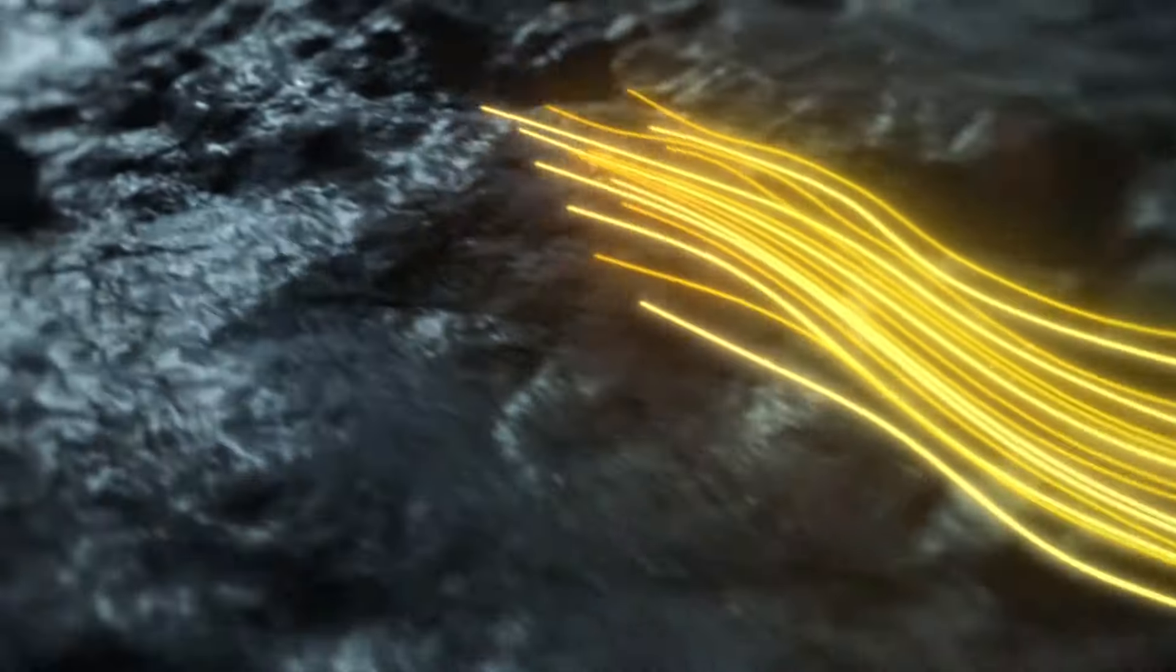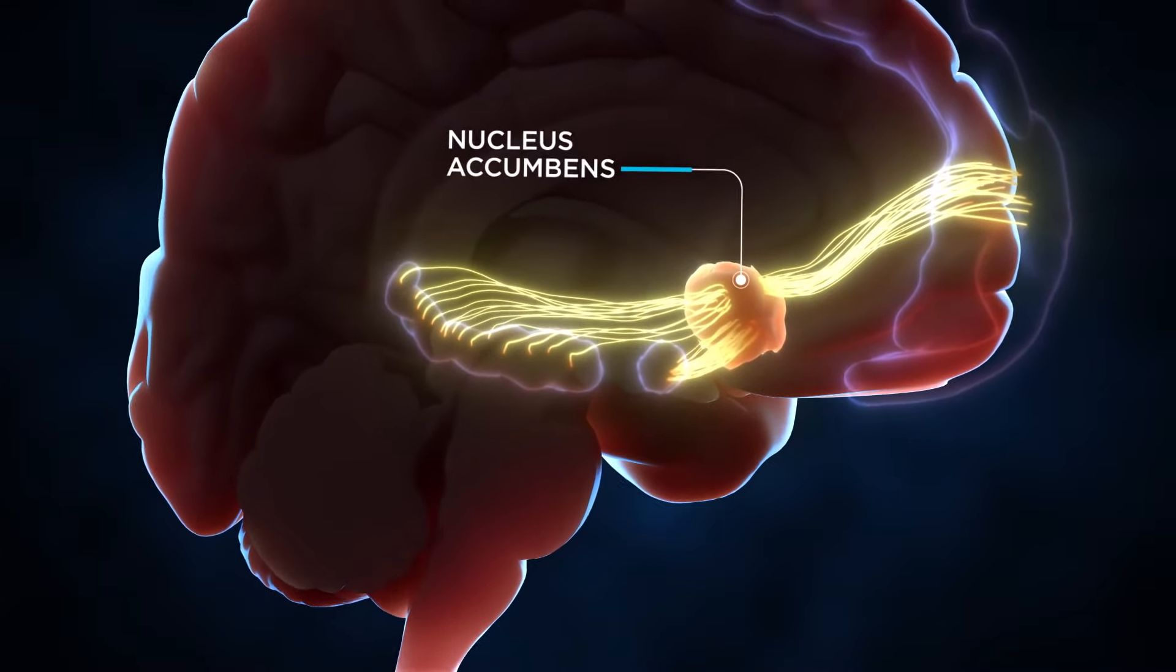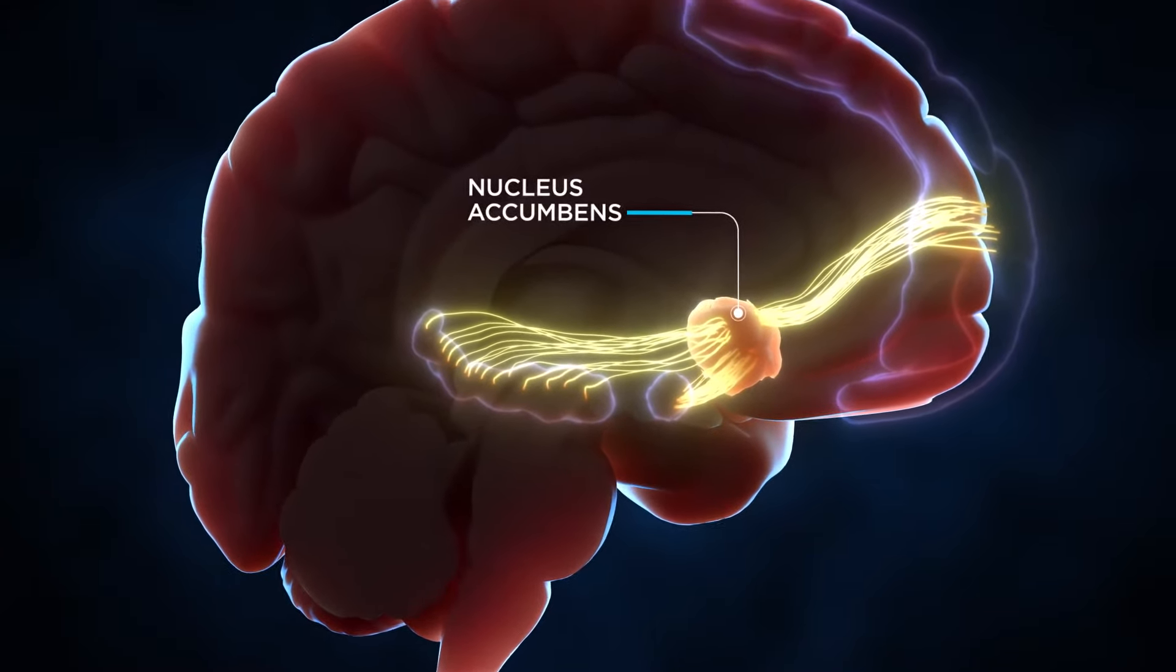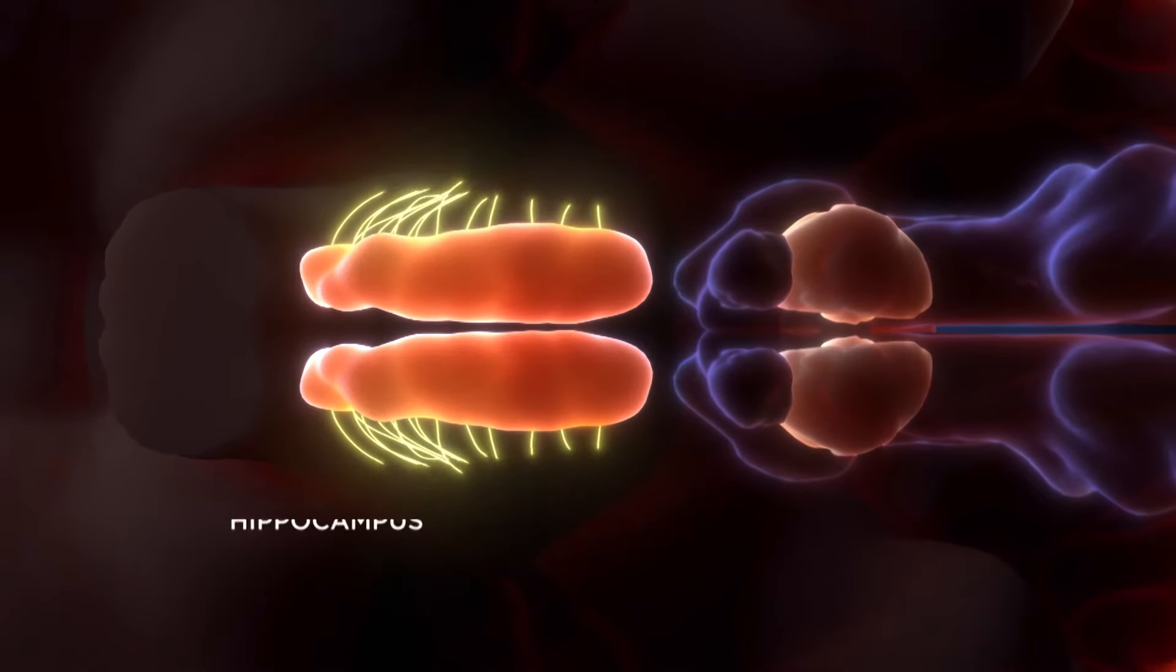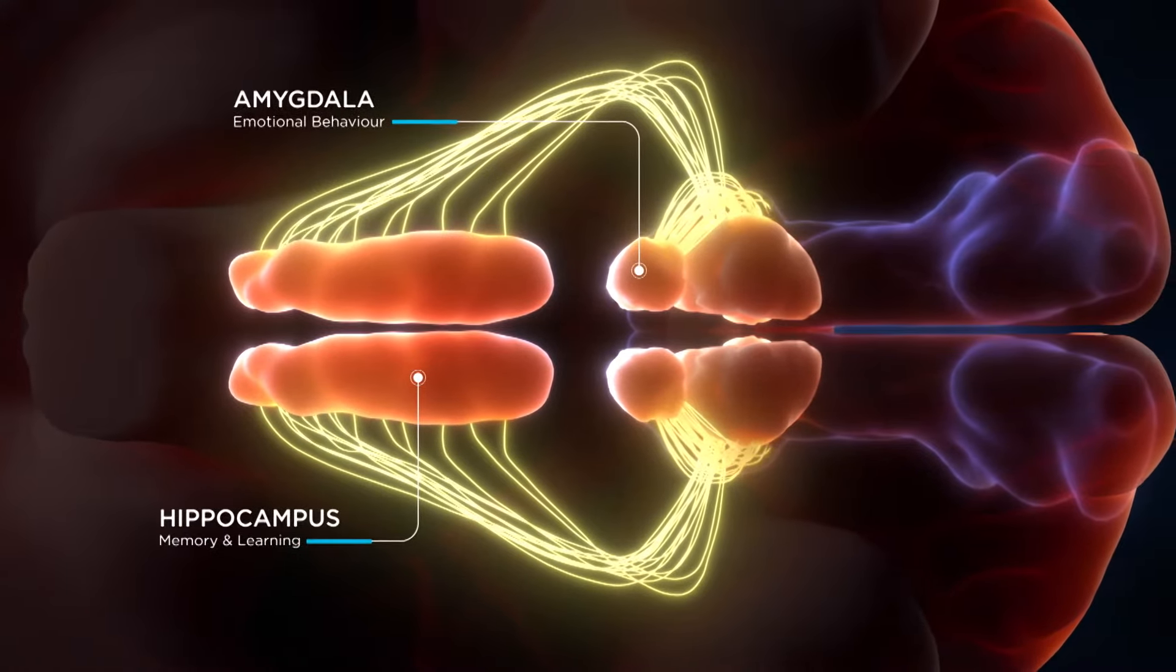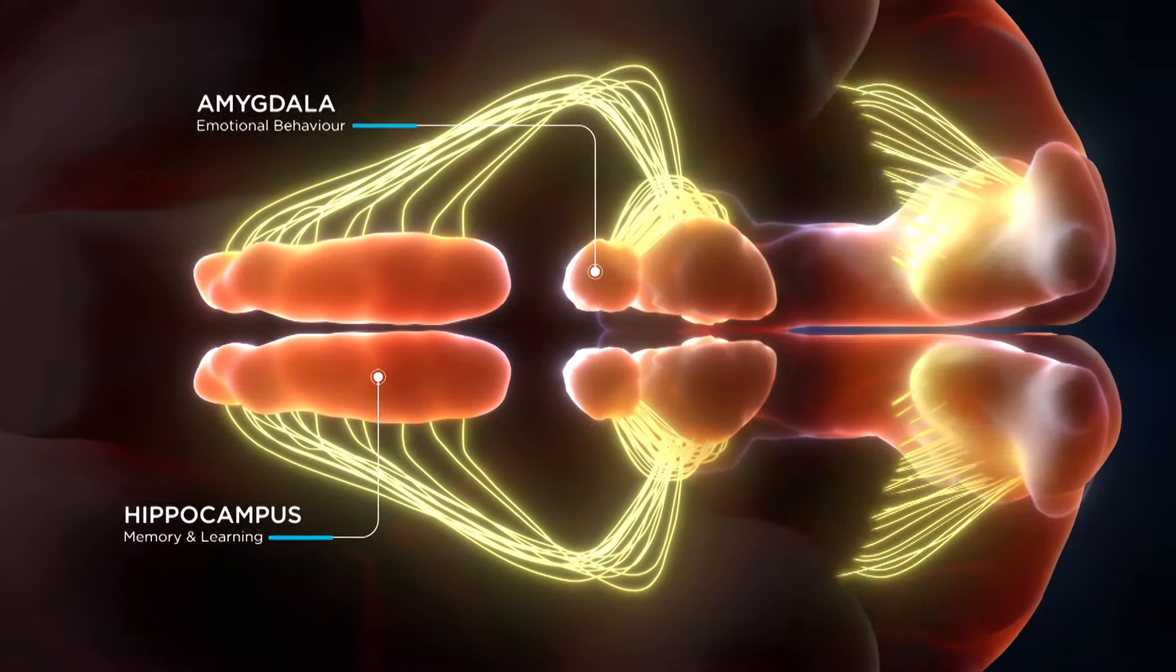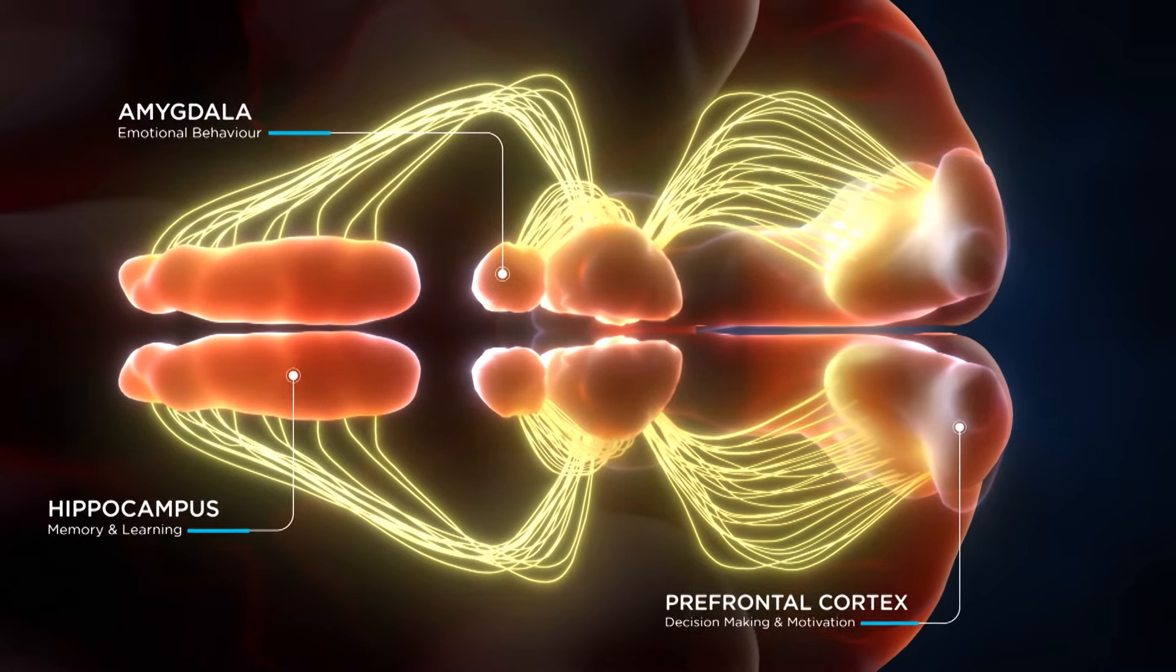The neural pathways underlying hope center around a region in the brain known as the nucleus accumbens. This area integrates information from three main structures: the hippocampus, associated with memory and learning; the amygdala, involved in emotional behavior; and the prefrontal cortex, which is central for decision making and motivation.